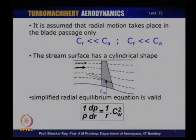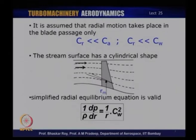Some of the first assumptions related to three-dimensionality concern the radial component of flow, which is prima facie very small in relation to the axial component CA and the whirl component CW. Designers attempt to create blades which would promote flow over blade surfaces with a very small radial component CR. If it is in a rotor, we may call it VR. However, the radial component would be rather small compared to the whirl component.